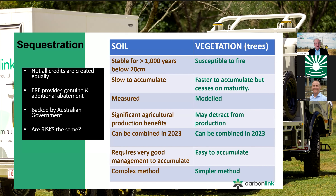We talked last time about the difference between sequestration and an avoided emission. Not all credits are created equal — the market is differentiating based on price and quality. ACCUs are backed by the Australian government. Comparing a soil carbon project and a vegetation project: generally, once soil carbon is below about 20 to 30 centimetres it's stable for around 1,000 to 2,000 years. The deeper it gets, by 1.5 to 2 metres, carbon is stable for around 10,000 to 13,000 years.